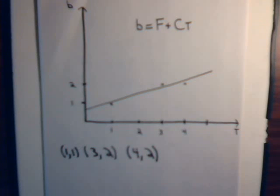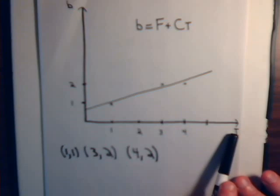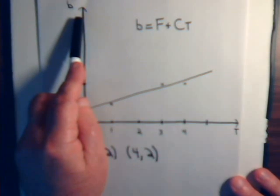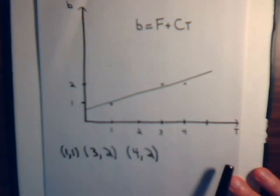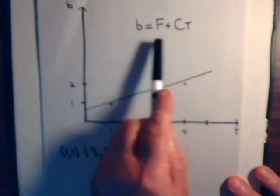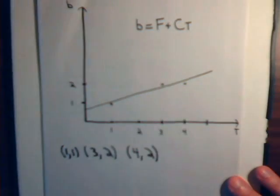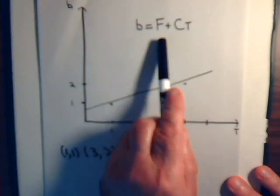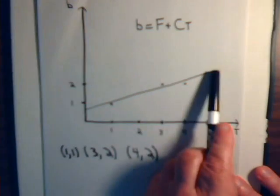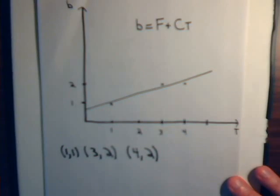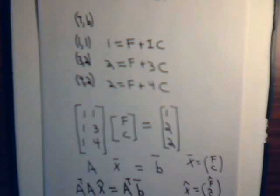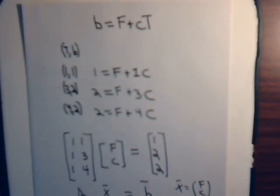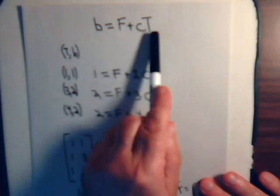Now, if this is the t-axis and this is the b-axis, a general equation in slope-intercept form for this line would be b equals f plus ct, where f is the y-intercept and c is the slope of the line. So we have a general form for the straight line.